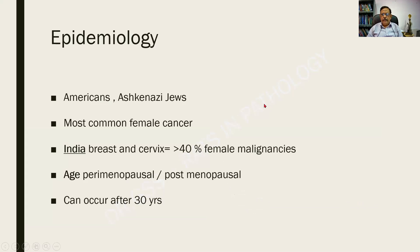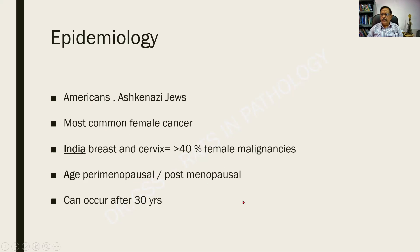Coming to the epidemiology for the sake of completion: breast cancer is more common in Americans and Ashkenazi Jews, and it is one of the most common female cancers. In India, cancer of the breast and cervix account for more than 40 to 50% of female malignancies. Age of occurrence is predominantly perimenopausal or postmenopausal, and it is very rare before 30 years of age.